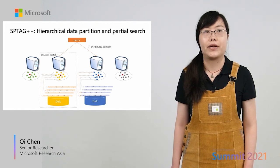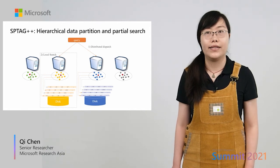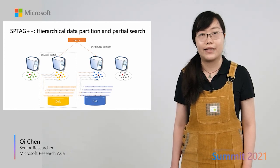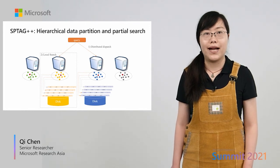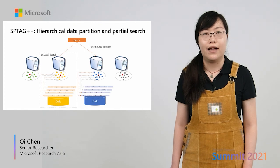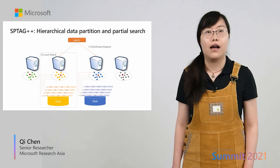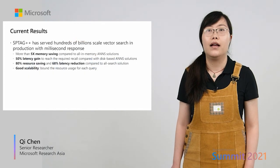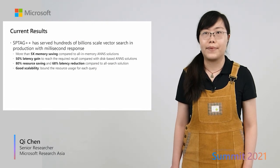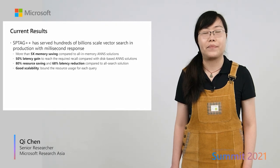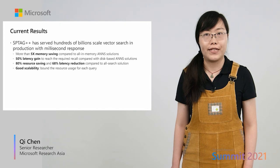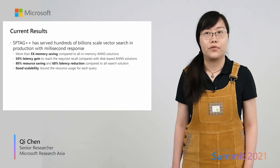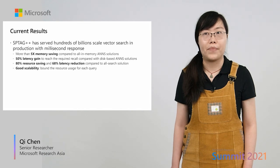By applying the three solutions in both distributed dispatch and local search, we have SPTAC++: a new hierarchical data partition and partial search solution. We first balance-cluster all the data into m partitions, where m is the number of machines, and then further partition the data in each machine into n partitions, where n is a large number. When a query comes, we first dispatch it to the nearest machines and then use a fast index to navigate the query to the nearest posting lists stored on disk for fine-grained search. SPTAC++ achieves hundreds of billion scale vector search in production with millisecond response, more than 5x memory saving compared to all in-memory ANN solutions, and 50% latency gain to reach the required recall compared to disk-based ANN solutions.